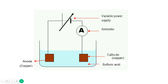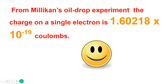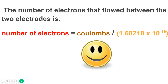At the negative terminal (cathode), hydrogen gas is liberated due to the reduction of hydrogen positive ions in the aqueous sulfuric acid solution. In the diagram, the anode and cathode are both copper, the electrolyte is sulfuric acid, and an ammeter is attached to find the coulombs — the current passing through the cell. From Millikan's oil drop experiment, the charge on a single electron is 1.60 × 10⁻¹⁹ coulombs. The number of electrons that flow between the two electrodes equals the total coulombs divided by the charge on one electron.